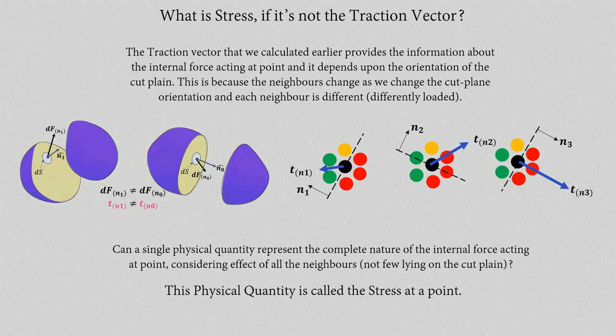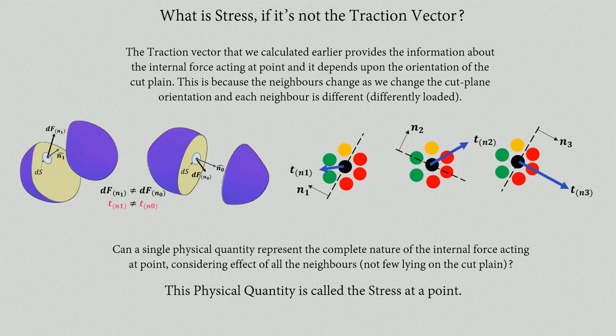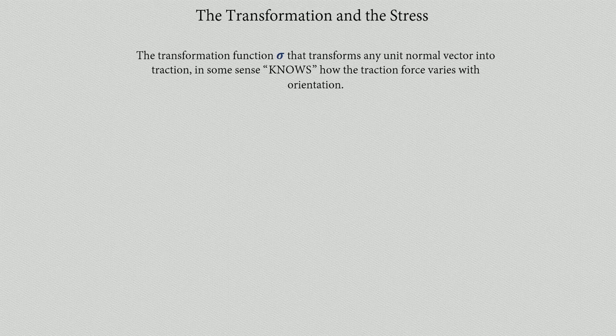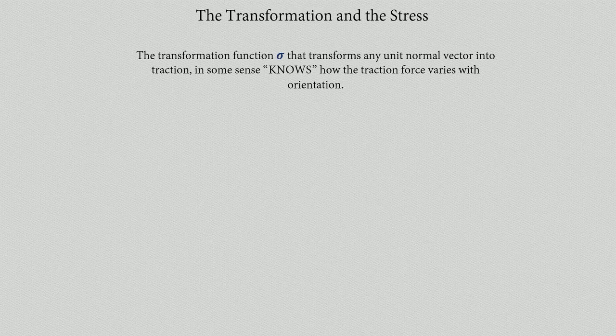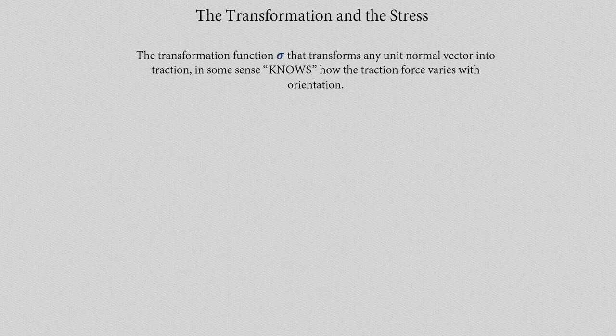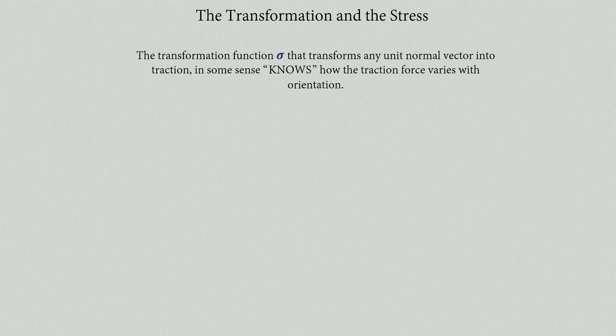Now we saw that the transformer sigma actually converted the normal unit vector into the traction on that plane whose normal is there. So somehow we can think that there is some information stored in sigma and its components in a specific coordinate system, such that it knows how things change as you change the orientation. You can input any normal vector and you'll get the traction in that plane. In that sense, sigma knows a lot—it knows everything.